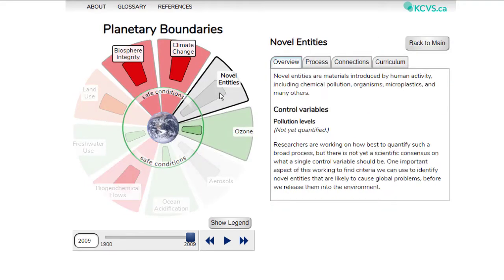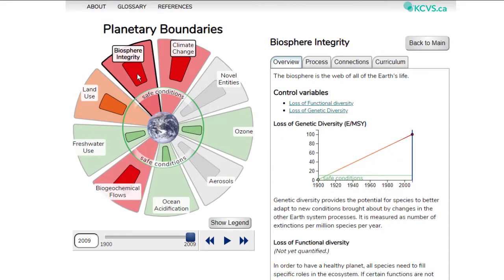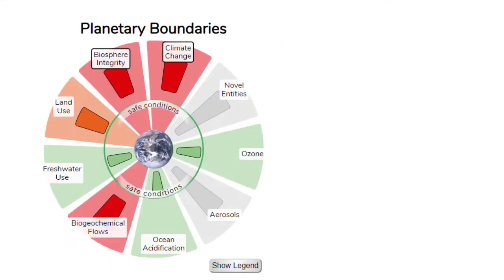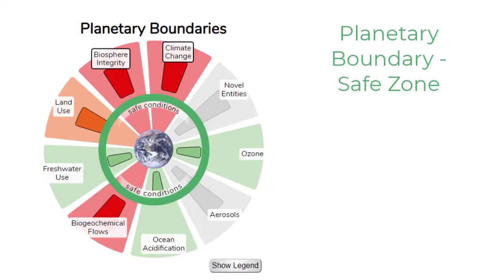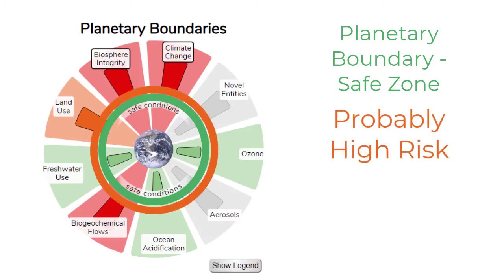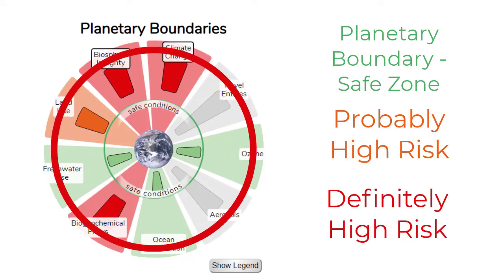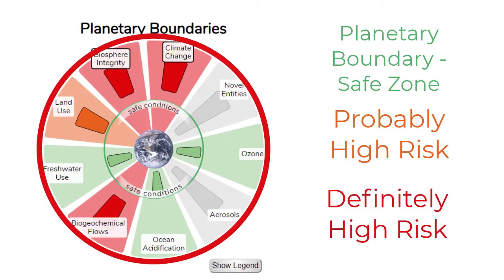The atmospheric aerosol loading and novel entity systems, as well as the functional diversity part of biosphere integrity, are still being researched, and control variables have not yet been finalized or quantified for these systems. Each control variable has a planetary boundary, which defines the safe zone for that Earth system — indicated by the green circle. As the control variable goes beyond the planetary boundary, it first enters the orange zone, where there is probably high risk of irreversible damage to the Earth system. If it goes further, it enters the red zone, where we know that there is definitely high risk to the Earth system and the planet.